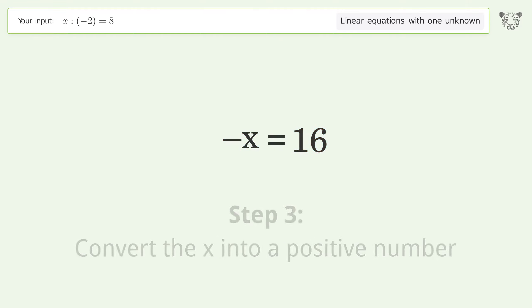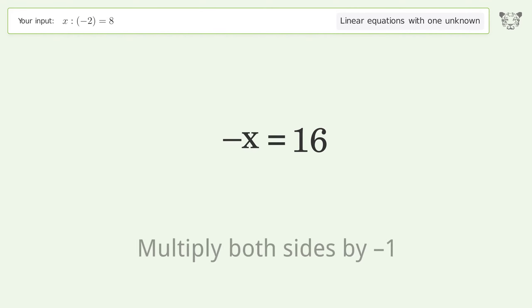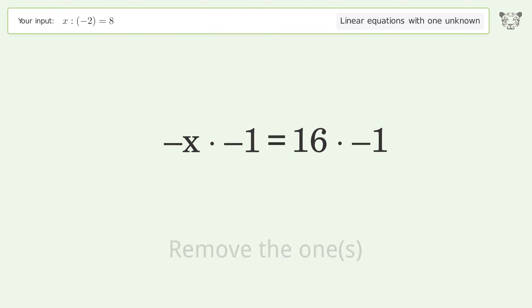Convert the x into a positive number — multiply both sides by negative 1. Remove the ones.